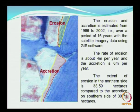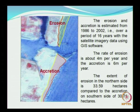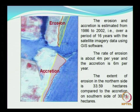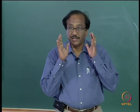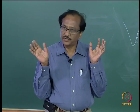Erosion and accretion was estimated from 1986 to 2002 — over 16 years — using satellite imagery with GIS software. The rate of erosion was found to be about 4 meters per year and accretion about 6 meters per year. The extent of erosion on the northern side was about 34 hectares compared to accretion on the south of about 30 hectares — still a deficit. This example illustrates what is meant by artificial beach nourishment, and once done perfectly, there should not be any problem.